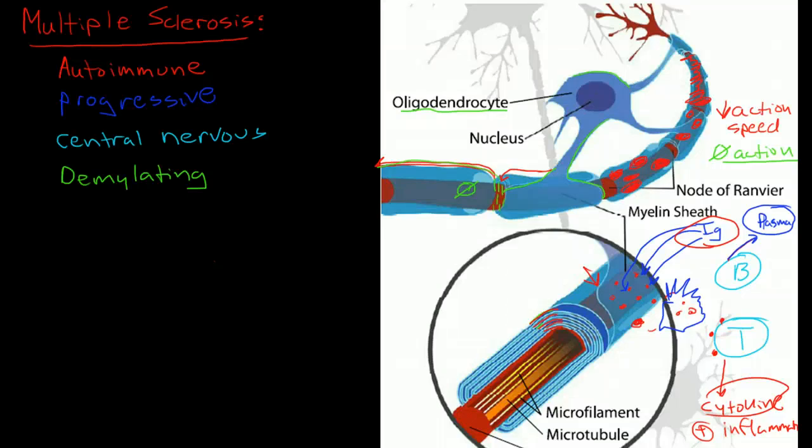So what causes this to happen to begin with? Why does the body all of a sudden start attacking its own tissues? This is somewhat of a mystery. We don't understand autoimmune diseases very well in general. But there are three main theories.